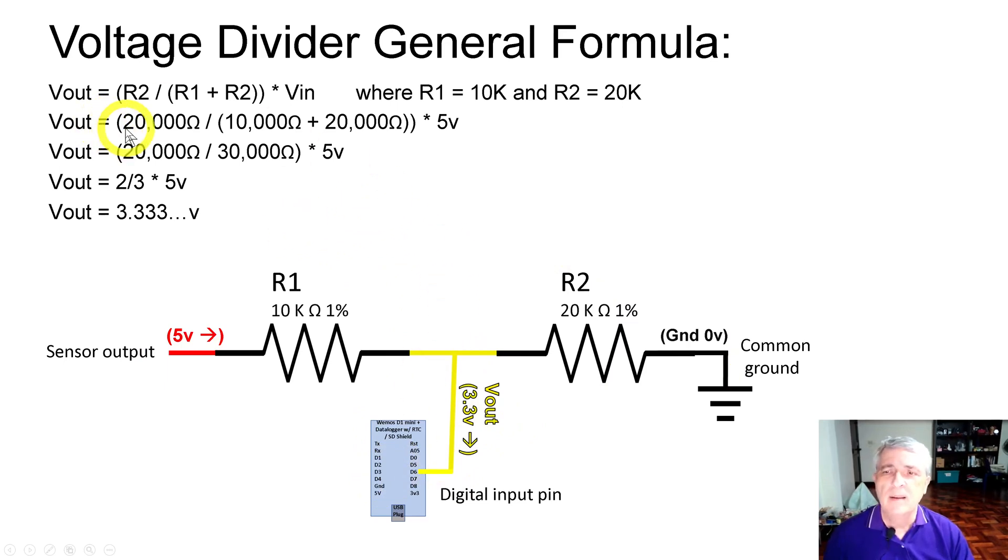The math is we plug our numbers in: R2 is 20, R1 is 10. So we plug in our numbers, we get out our calculator, we add up 10 and 20 and we get 30. So we have 20,000 divided by 30,000 times 5. That's 2 thirds times 5, and 2 thirds of 5 is 3.333 volts. That's what we get out of there. Simple enough.